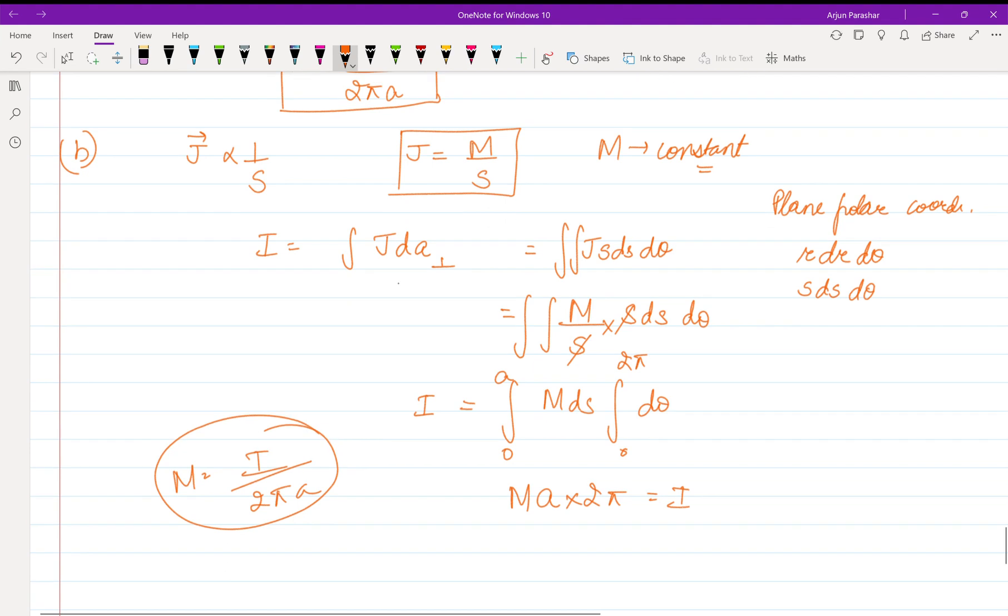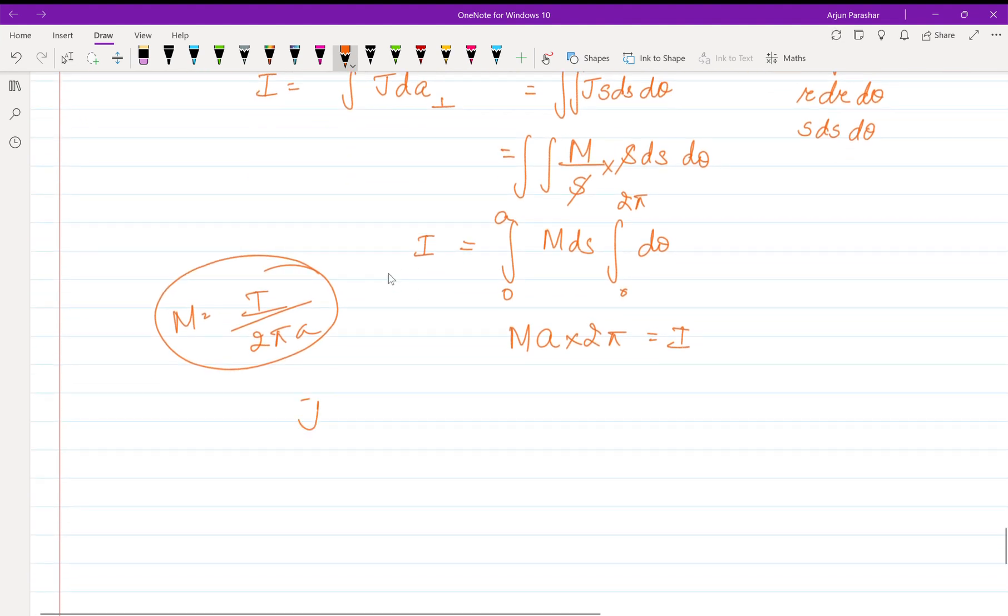So we got our proportionality constant. Putting the value of proportionality constant in this formula, we get I upon 2πa into S.